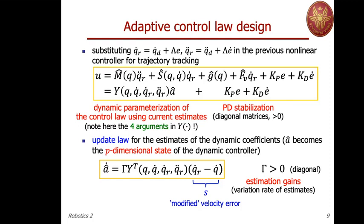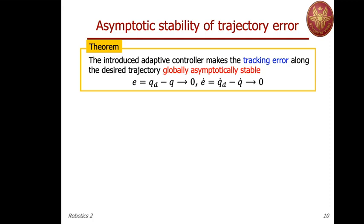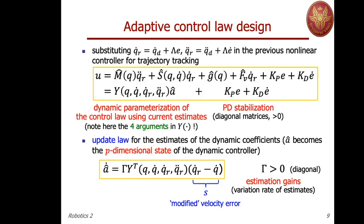This is the famous adaptive controller of Slotine and Li. The theorem states that this adaptive controller makes the tracking error globally asymptotically stable — it will converge to zero as time goes by. In the update law, this is a dynamic state for the controller. The number of states of the controller is exactly the number of dynamic coefficients in the model, which is why when doing linear parameterization we try to reduce the number p of dynamic coefficients — another reason we tend to find a minimal parameterization.